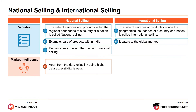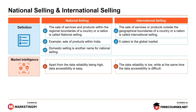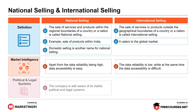Next, market intelligence. Apart from data reliability being high, data accessibility is easy in national selling. Whereas, the data reliability is low while at the same time the data accessibility is difficult in the international markets.